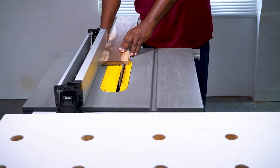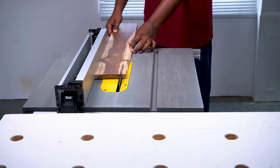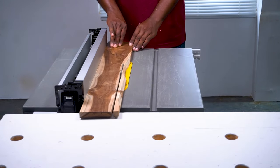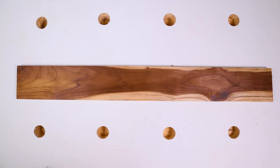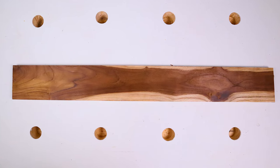Using a push block or push stick, push the board into the saw blade and complete the cut. Now you have two long straight edges.